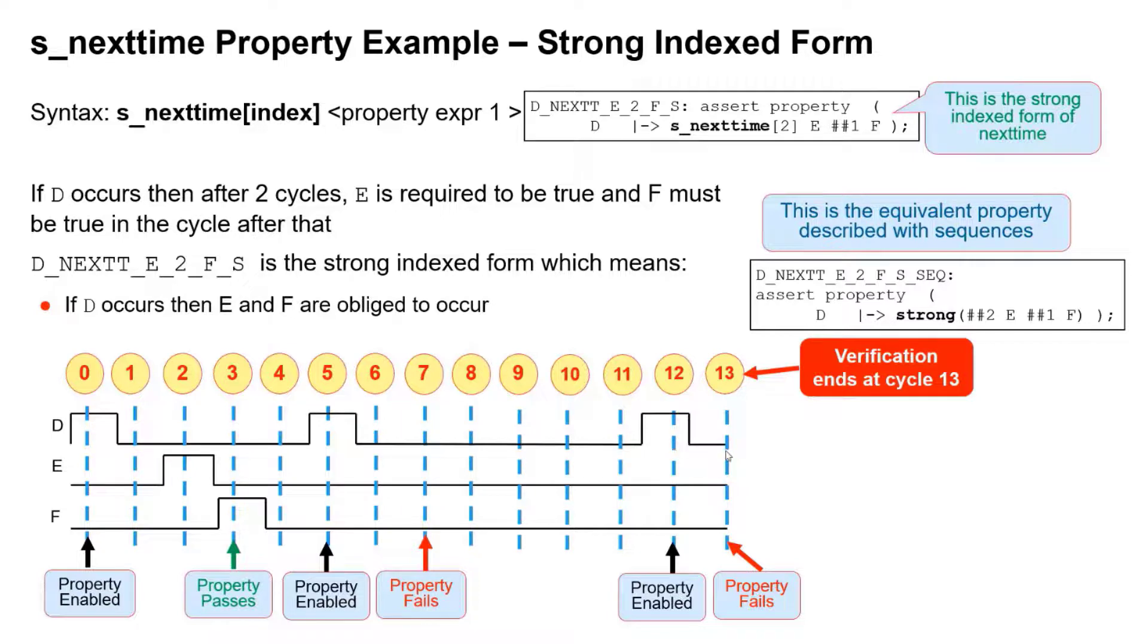If d occurs on the next cycle verification ends, that's deemed to be a failure in both formal and in simulation by default. So that's what strong means. Strong means there's an obligation for the entire right hand side, in this case, to complete.